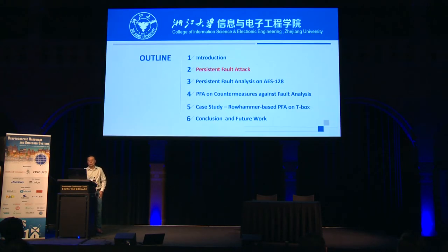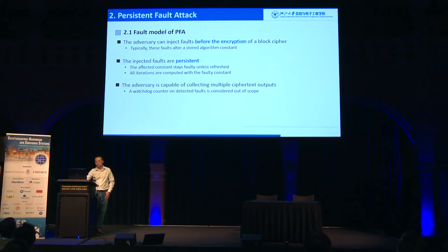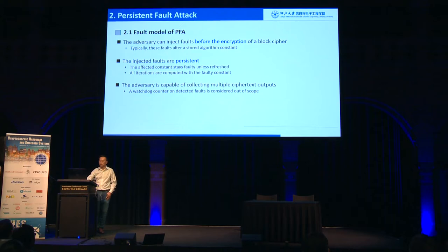Now I introduce the persistent fault attack fault model. First, we assume the adversary can inject the faults before the encryption of the block cipher. Second, the injected fault is persistent across multiple runs and multiple encryptions. Third, the adversary is able to read the ciphertext — this is quite normal. The watchdog counter is out of our discussion.